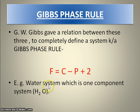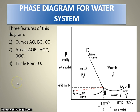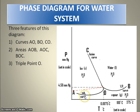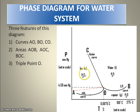The best example of this phase rule is the water system, which is a one-component system. Here you can see the phase diagram of the water system. There are three main curves: curve AO, curve OC, and curve OB. There are three areas: AOC, BOC, and BOA. And the most important point is the triple point of this curve.